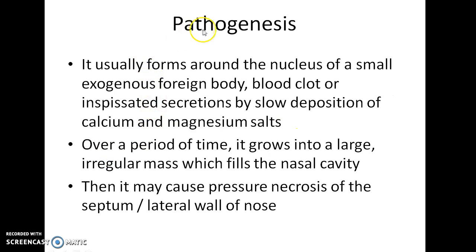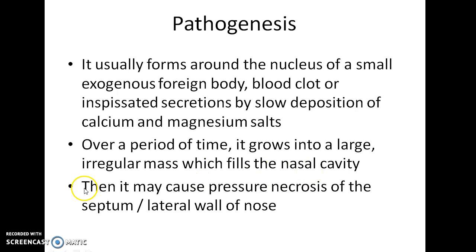What is the pathogenesis of rhinolith? Rhinolith usually forms around the nucleus of a small exogenous foreign body, blood clot, or inspissated secretions by slow deposition of calcium and magnesium salts. Over a period of time, rhinolith grows into a large irregular mass which fills the nasal cavity. It may then cause pressure necrosis of the septum or lateral wall of the nose.